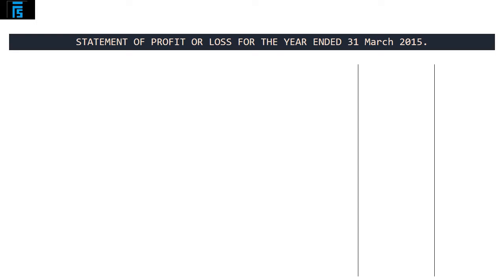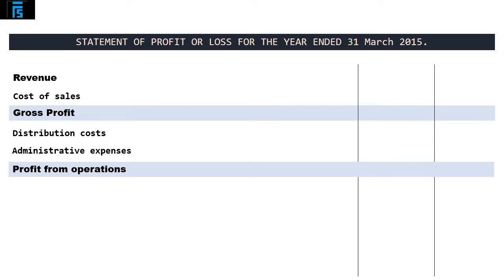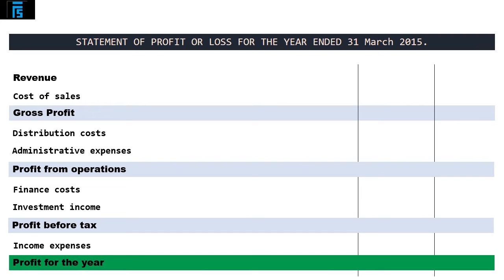Next, let's write out the standard items which appear in this statement. At the top, we will have revenue, followed by cost of sales and gross profit. Next come distribution costs and administrative expenses, after which we compute the profit from operations. This is followed by finance costs, investment income, and the profit before tax. And just two items left: the income tax expense and profit for the year. Whenever you come across a question which requires you to generate a statement of profit or loss from a trial balance, I strongly recommend that you begin by writing out and then following this standard framework.